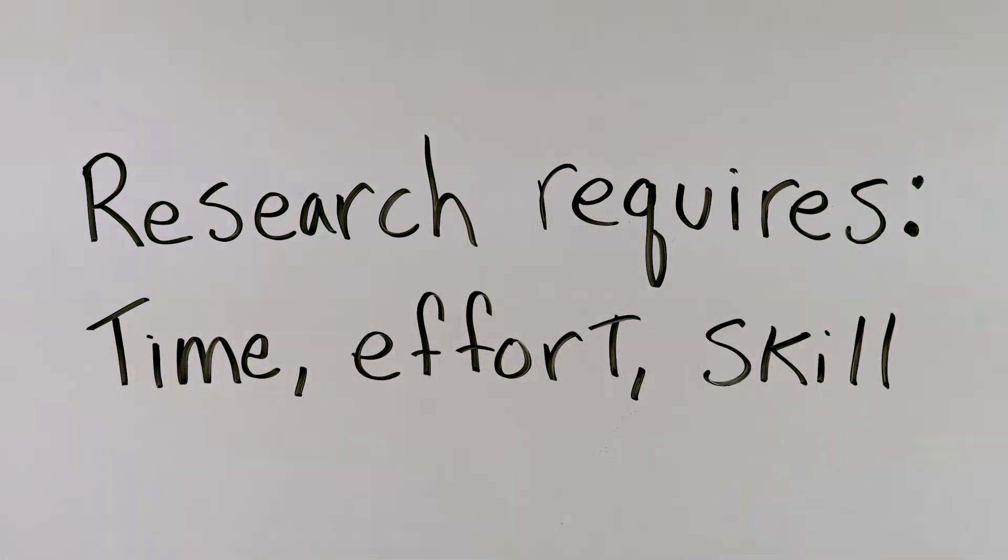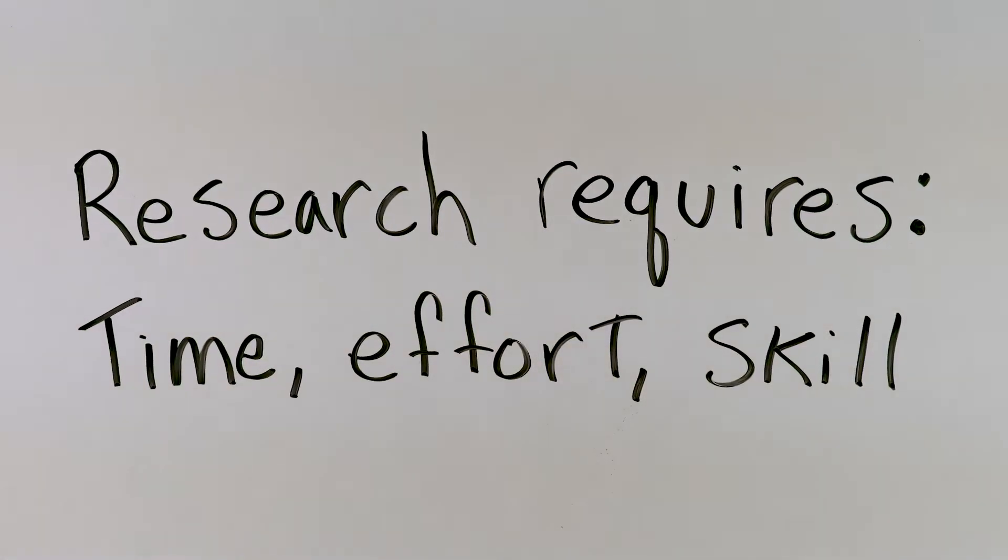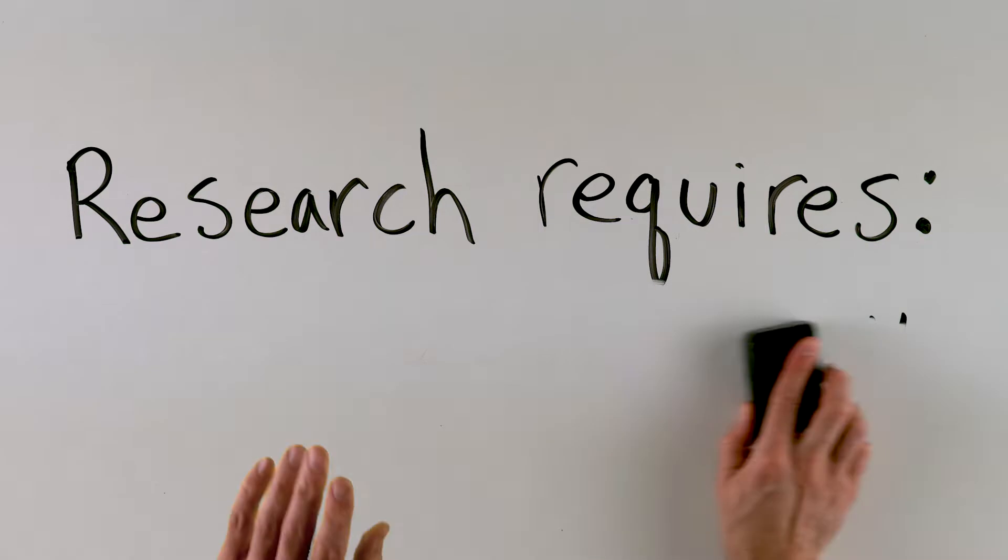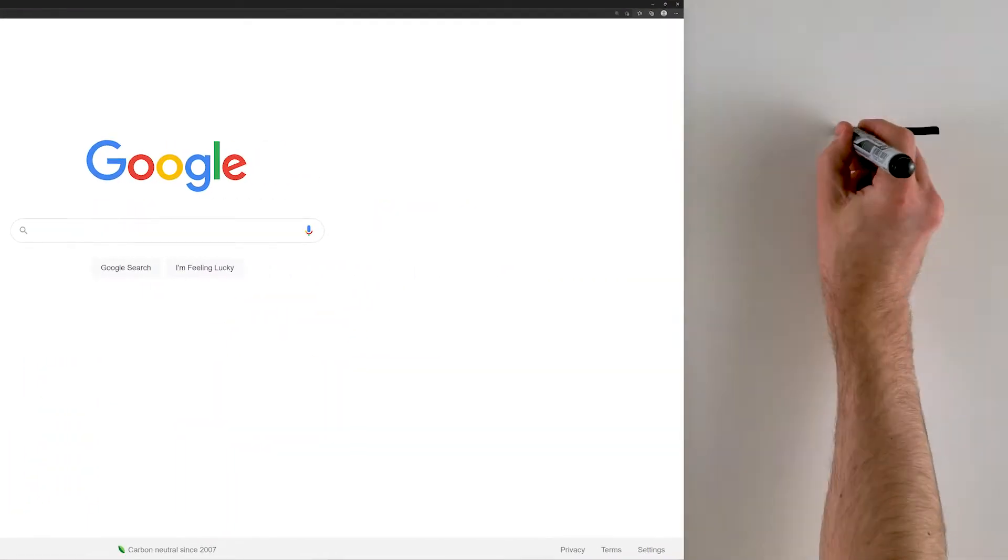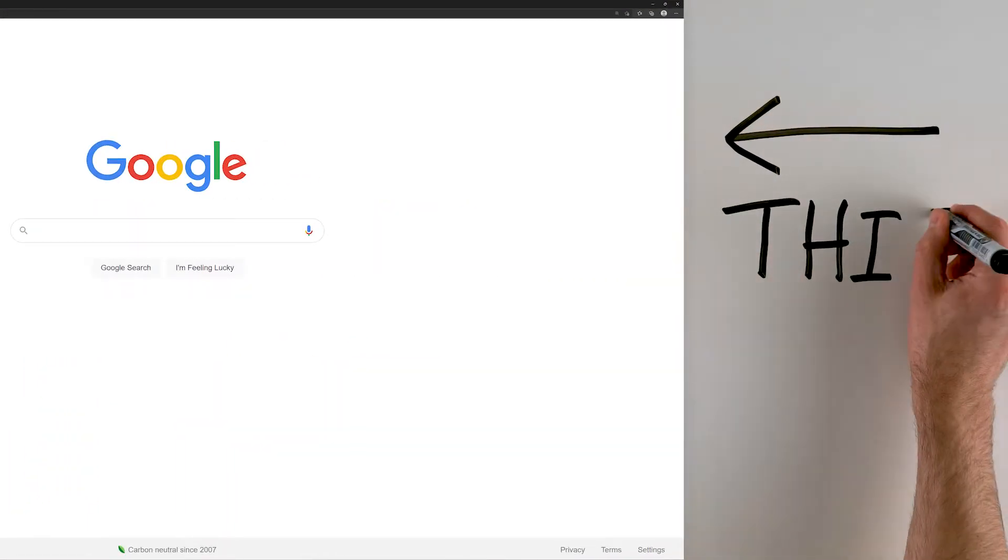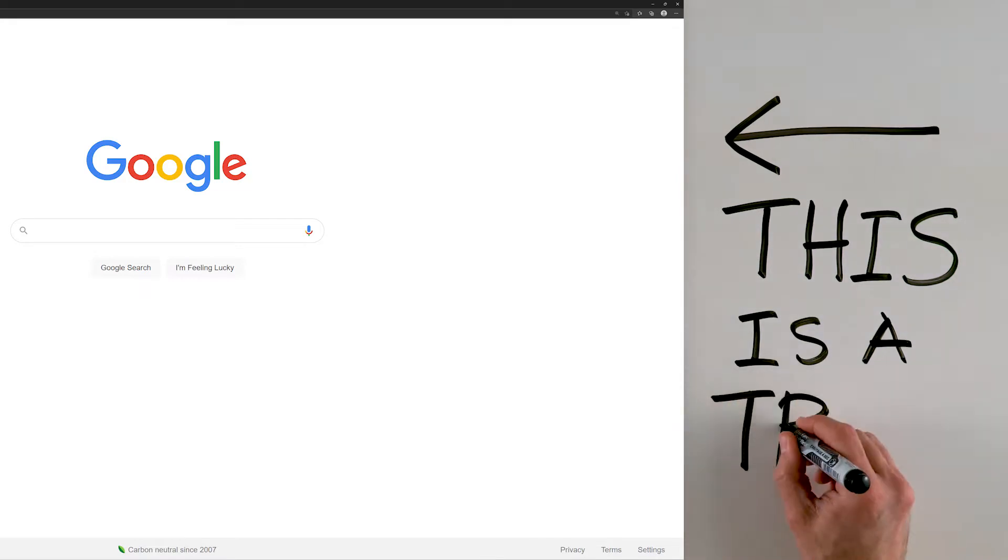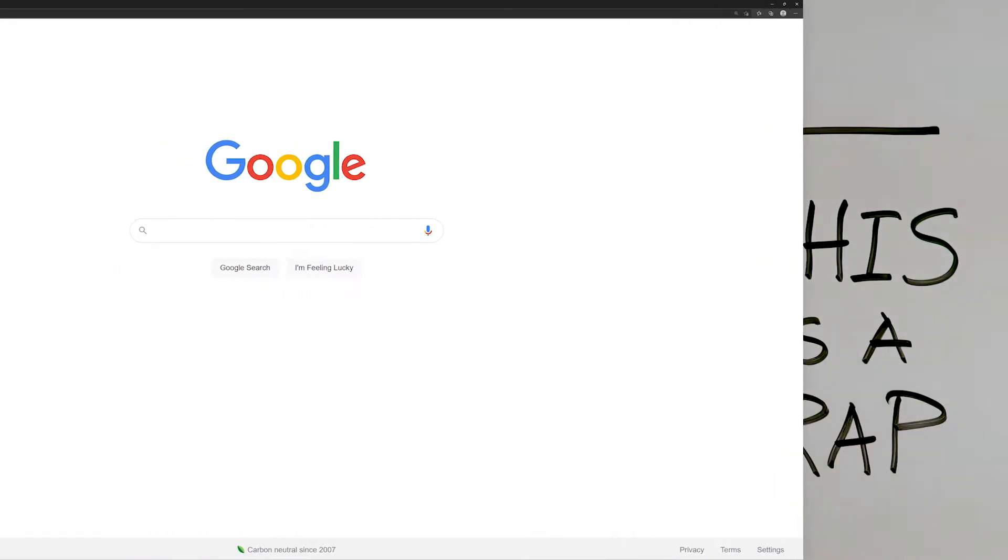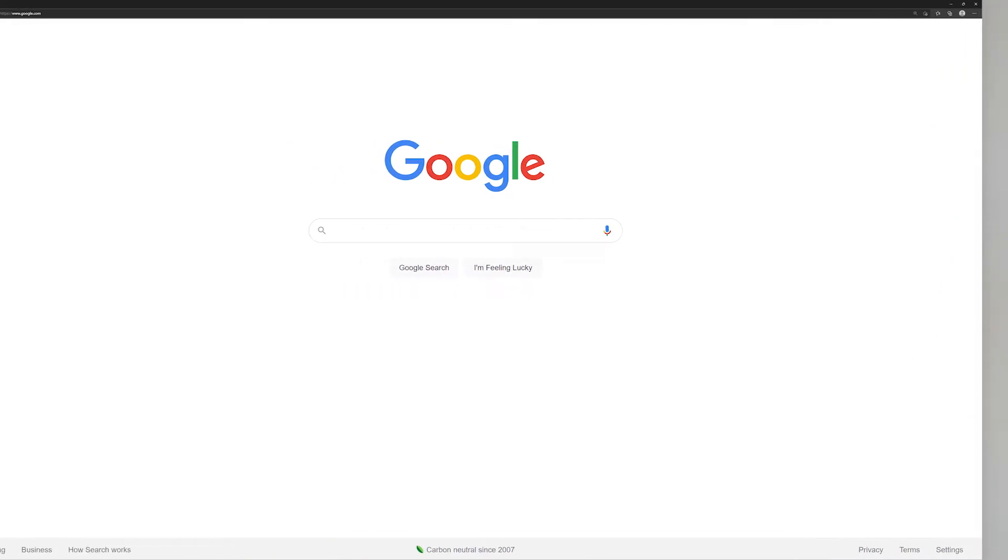What's the lie? It's that research can be simple and easy. I wish. Research is difficult. It takes time and effort and skill, and if it doesn't, you're doing it wrong and your results aren't going to be good. See this nice simple search box? It's a lie by design, meant to draw you in. So simple and friendly.